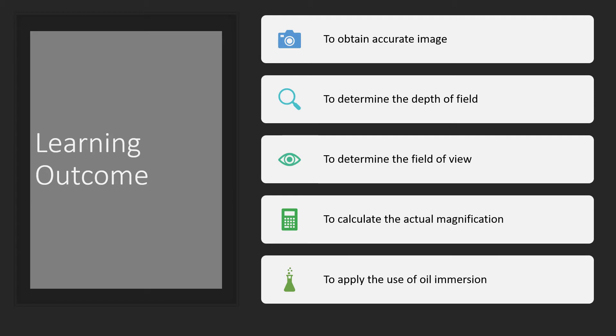We have 5 learning outcomes in this experiment, which are to obtain accurate images, to determine the depth of field, to determine the field of view, to calculate the actual magnification, and to apply the use of oil immersion.